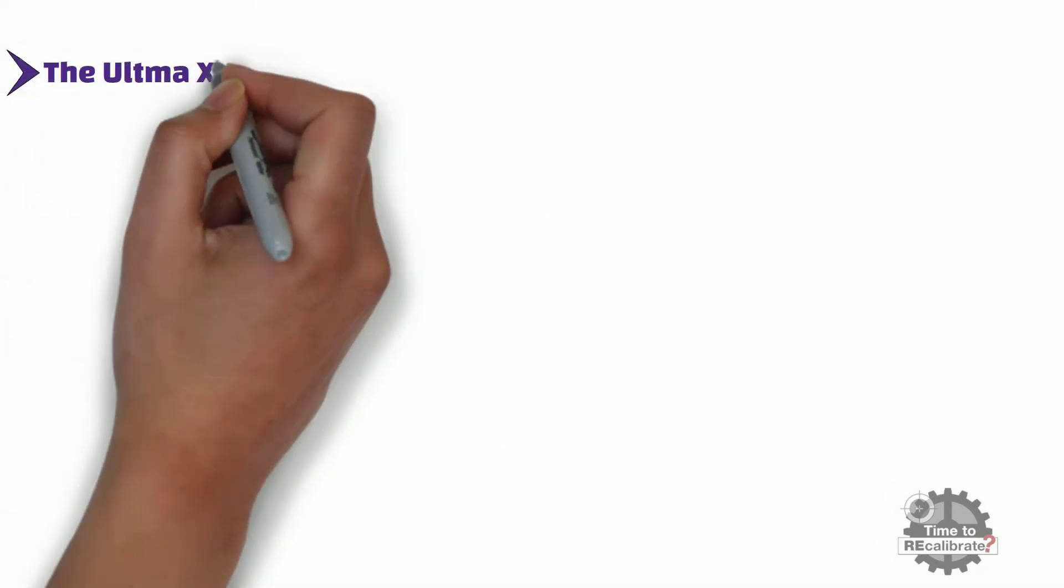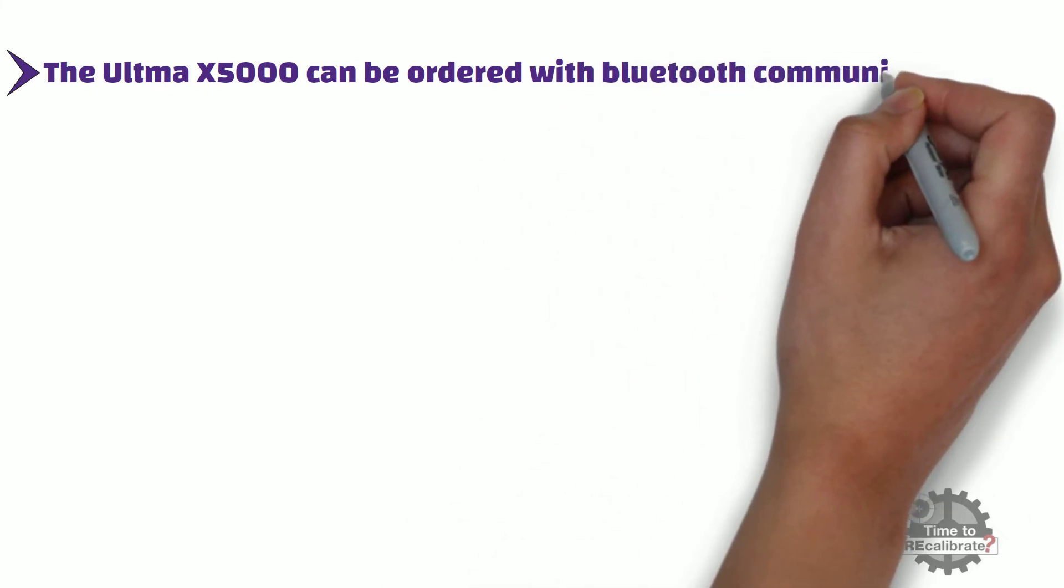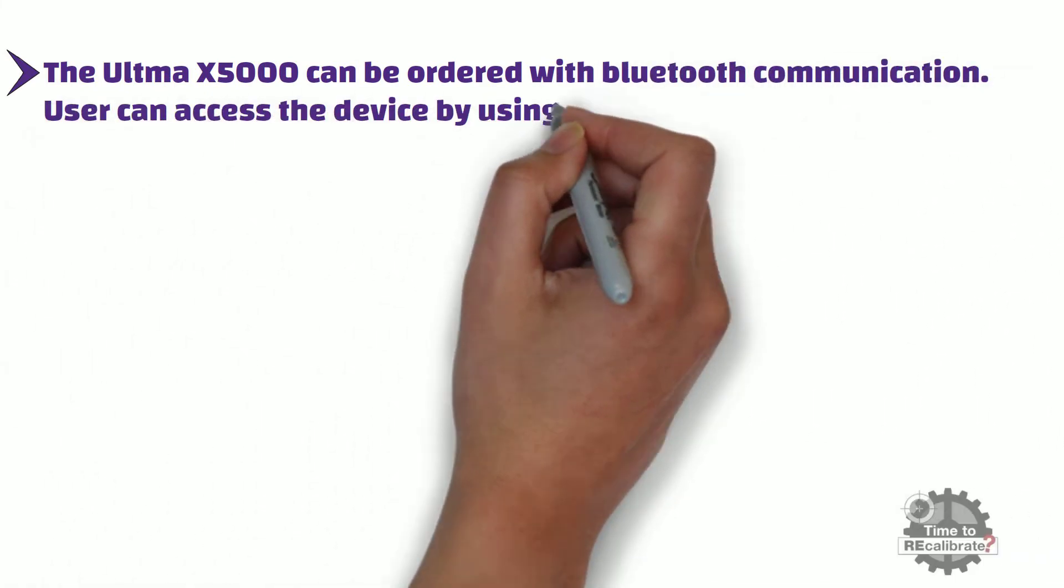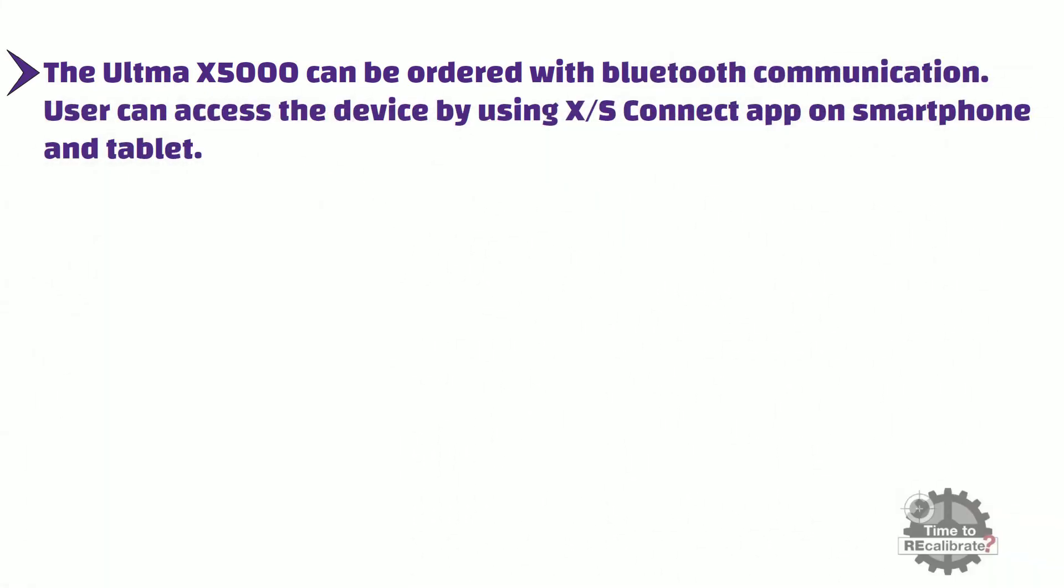The Ultima X5000 can be ordered with Bluetooth communication. Users can access the device by using the XS Connect app on smartphone and tablet.